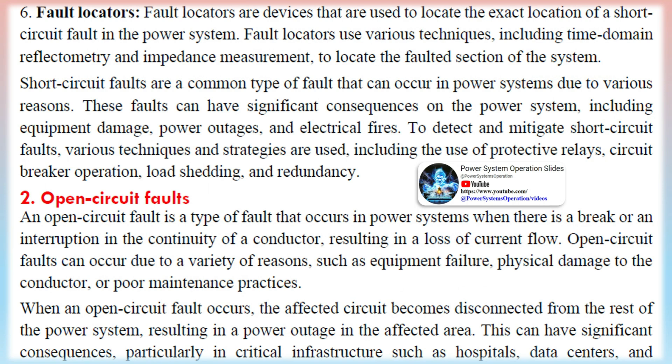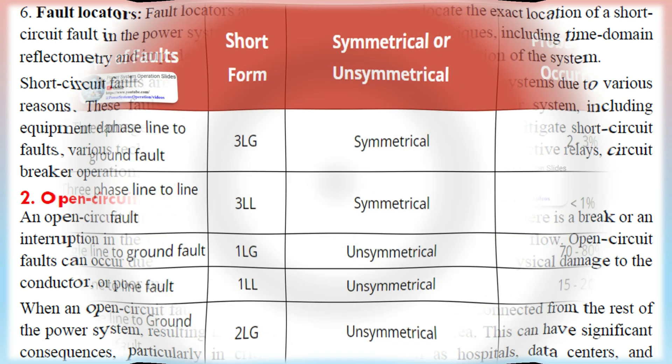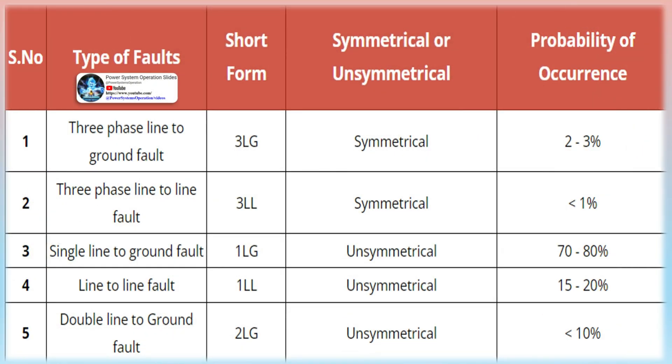An open-circuit fault is a type of fault that occurs in power systems when there is a break or an interruption in the continuity of a conductor, resulting in a loss of current flow. Open-circuit faults can occur due to a variety of reasons, such as equipment failure, physical damage to the conductor, or poor maintenance practices. When an open-circuit fault occurs, the affected circuit becomes disconnected, resulting in a power outage in the affected area. This can have significant consequences in critical infrastructure such as hospitals, data centers, and industrial plants, where power interruptions can lead to significant downtime, equipment damage, and financial losses.